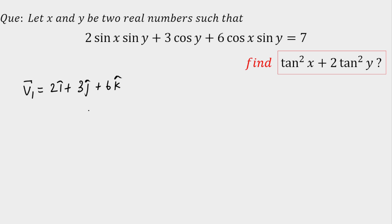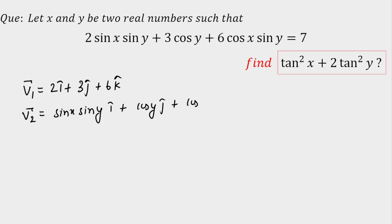I'll tell you why I am taking vectors. And let's say vector v2 = sin(x)sin(y) î + cos(y) ĵ + cos(x)sin(y) k̂.